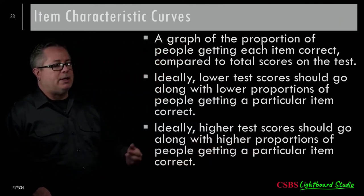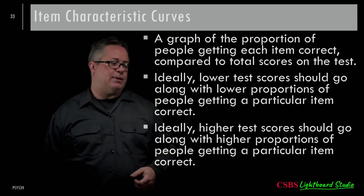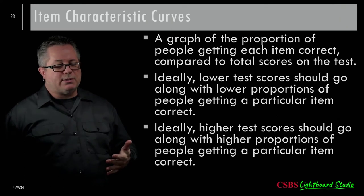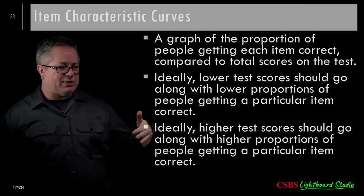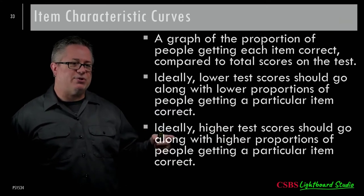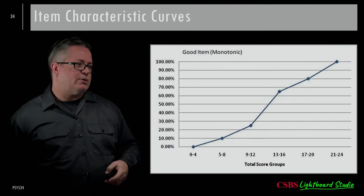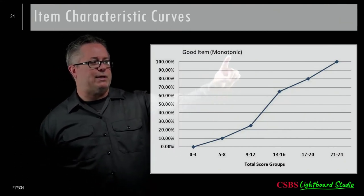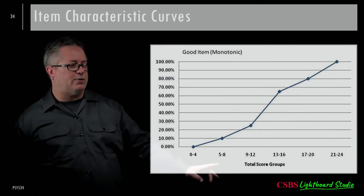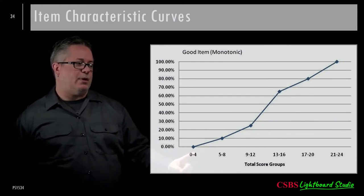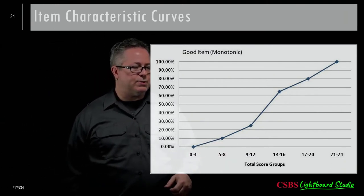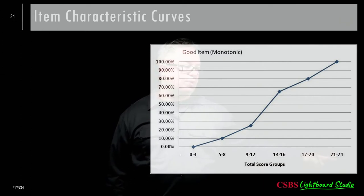Ideally — and actually necessarily if items are functioning properly — lower test scores should go with lower proportions getting an item correct, and higher test scores with higher proportions. As ability increases, the chance of answering any one question correctly should also increase. This property is called monotonicity.